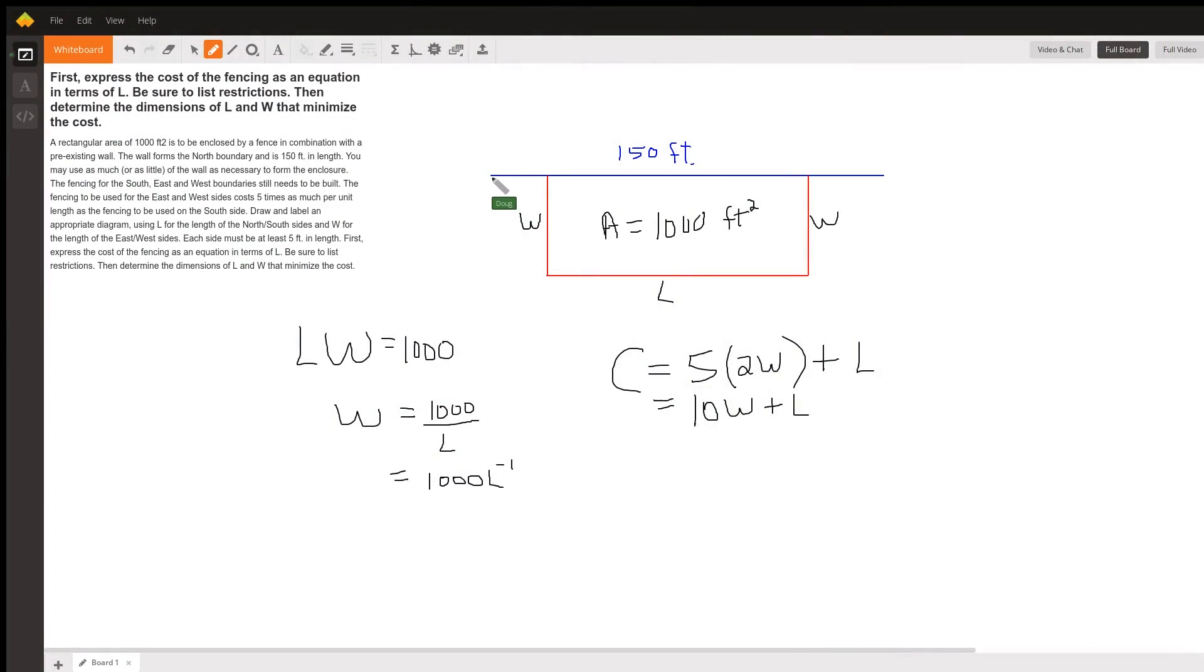So far, we've got this wall on the north boundary that's 150 feet long. And we've got some fencing that we need to get to enclose an area of 1,000 square feet.